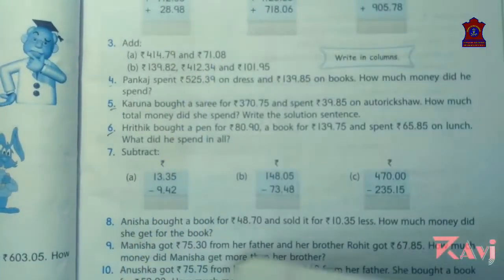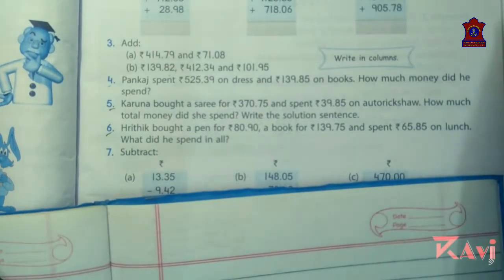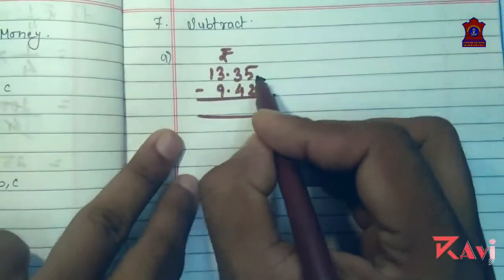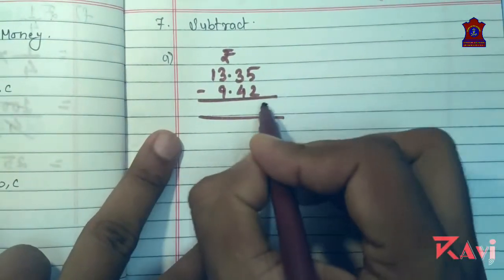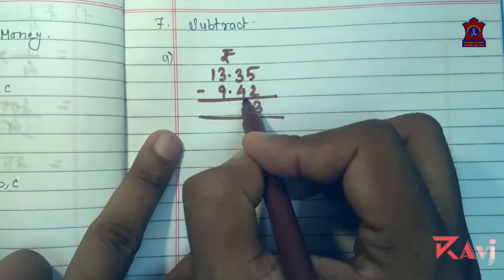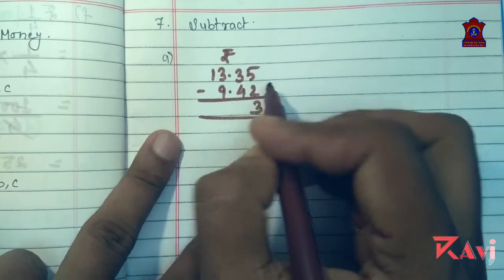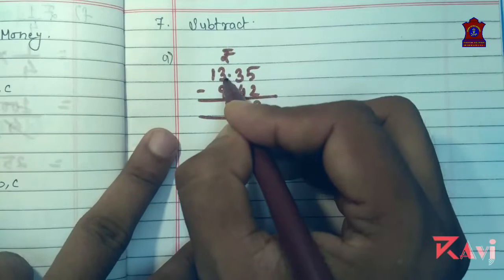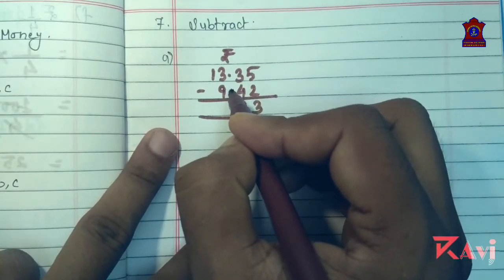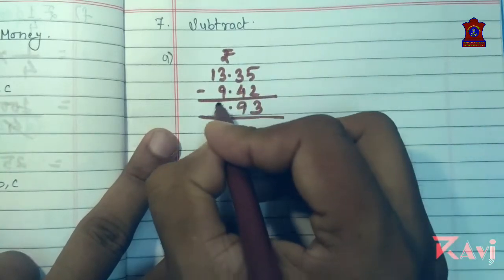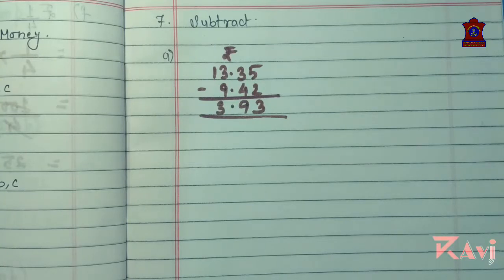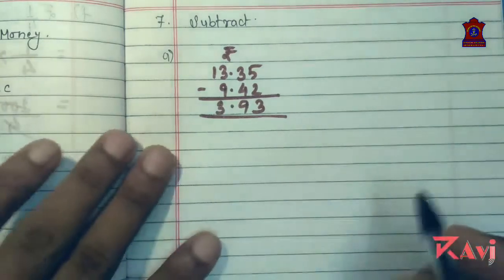Like this, solve question number four, five, and six. Question four is already done; five and six you will do by yourself. Question number seven: simple subtraction — 5 minus 2 is 3; 3 minus 4 is not possible, so borrow 1 — 13 minus 4 is 9; 2 minus 9 is not possible, so borrow — 12 minus 9 is 3. So the answer is rupees 3.93.